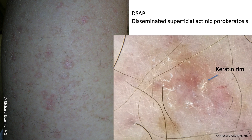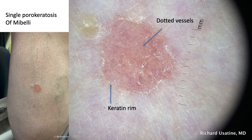Here's an example of disseminated superficial actinic porokeratosis (DSAP), where we're seeing the keratin rim on one of the lesions. Here it is clinically — multiple porokeratosis lesions. And here's a single one, sometimes called of my belly. Here we're seeing not only the keratin rim wall of China, but some beautiful dotted vessels in the middle. Together, that is the pattern of a single porokeratosis — something this classic, you don't even need to biopsy it.